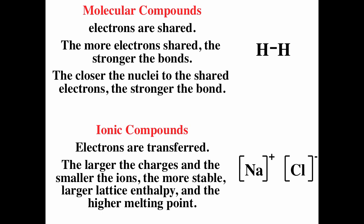The larger the absolute value of the charges, the more stable the ionic compound, the larger the lattice enthalpy, and the higher the melting point. We also saw that the smaller the physical size of the ions, the closer the ions, the more stable, the larger the lattice enthalpy, and the higher the melting point. Please remember that the absolute value of the charges is the most important consideration in determining stability for the ionic compound.